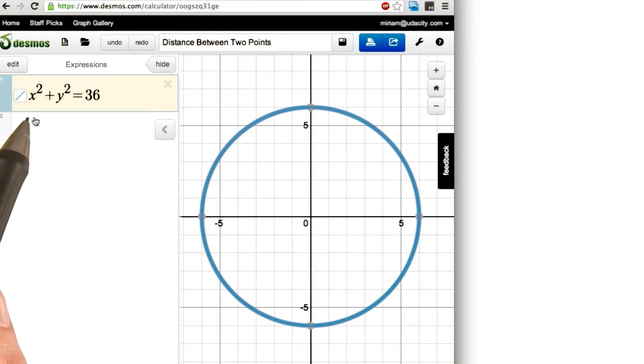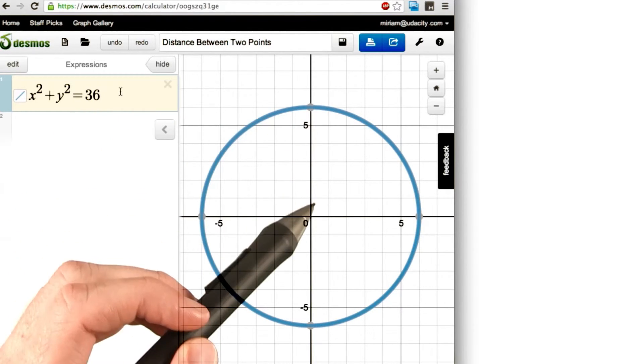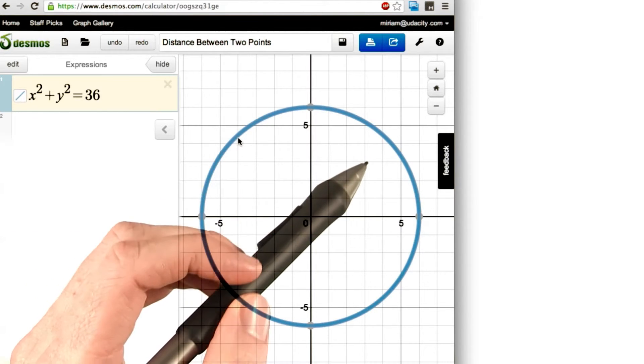For circles, we know they have equal amounts of x squared and y squared. And if we take the square root of this number, we'll get 6. That's the radius of our circle, the distance from the center to any point on the circle.